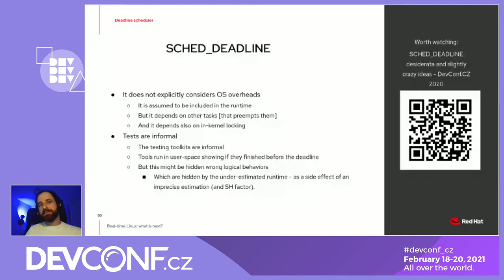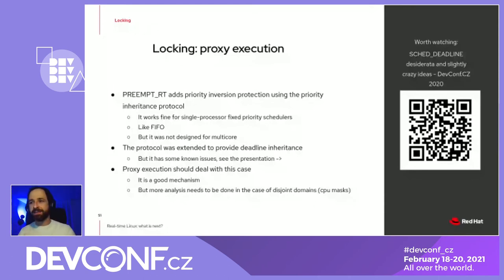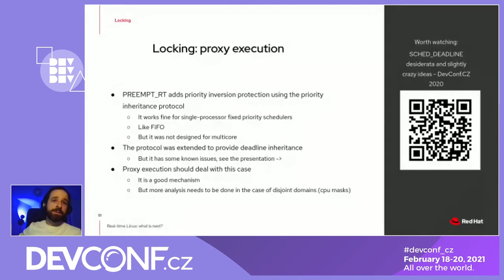One such problem was tasks with deadlines shorter than the period. Another point is that with proxy execution currently in PREEMPT_RT, we have the priority inversion protocol that works like this: if a high-priority thread is waiting on a lower-priority one, the lower priority will inherit the higher priority to avoid a mid-priority task postponing the whole sequence.